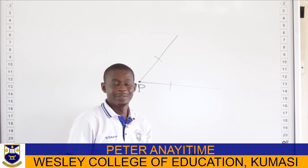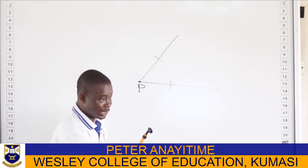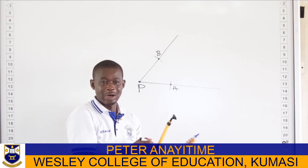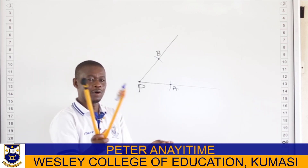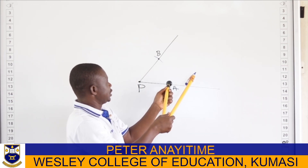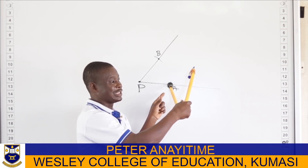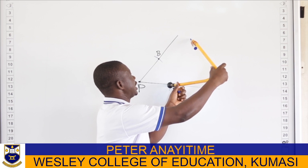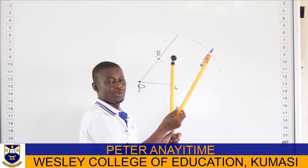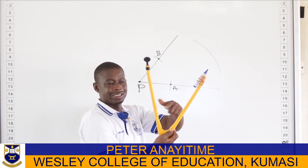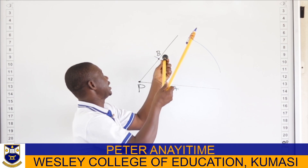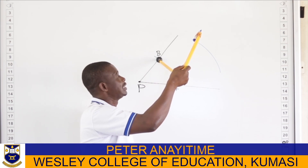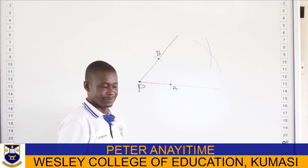Now the next step — we name this point A and this point B. What we are going to do is open the compass at a reasonable length, place one end of the compass on point A — that is where the arc intersects one arm — then describe an arc. With the same span, the same distance, you put the compass on the other end B and draw another arc to intersect the first one.